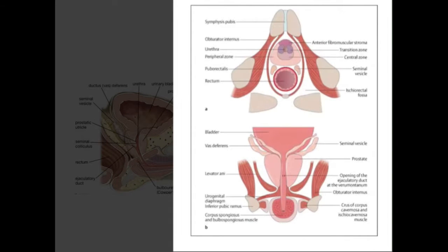The prostate consists of three zones, which can be seen in the diagram on the top right of this slide. These are the central zone, the transition zone, and the peripheral zone. It is enlargement of the transition zone that leads to benign prostatic hypertrophy.